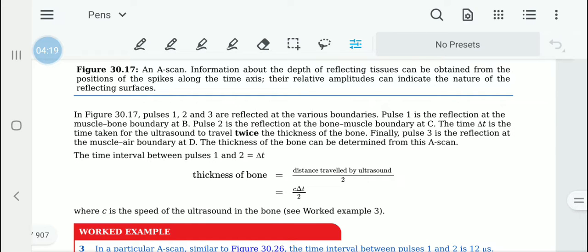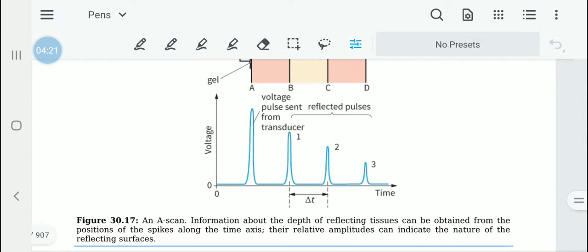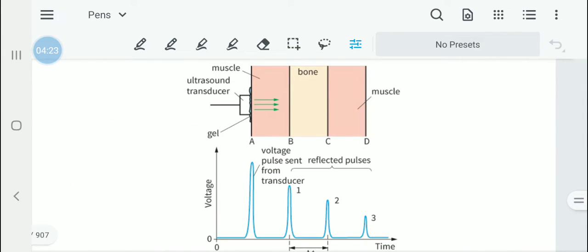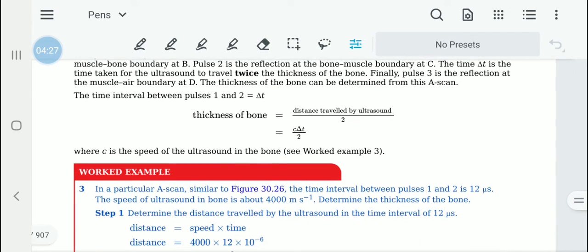Boundary at D is going to be the time it takes for the entire length to come back. Then we can figure out the thickness of the bone using distance traveled by the sound divided by 2. That is C delta T divided by 2.